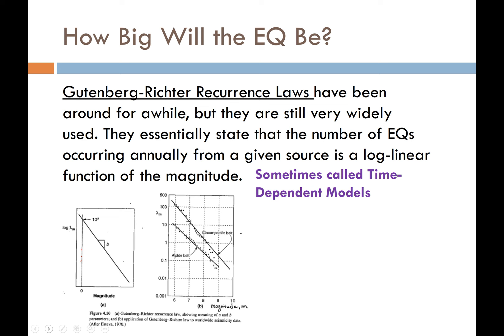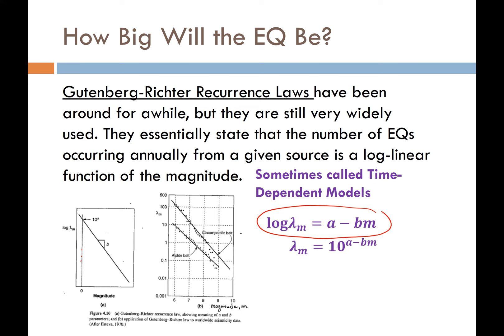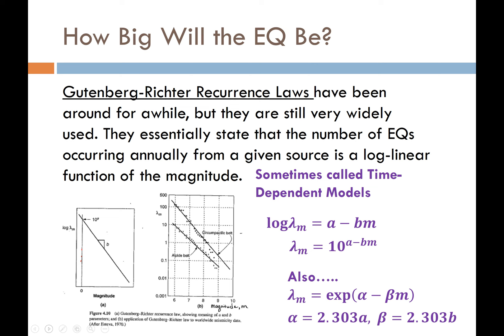These Gutenberg-Richter models are sometimes called time-dependent models. We describe the recurrence relationship using the equation between A and B, or solving linearly for the mean annual rate of exceedance. If we want to write things in terms of natural log, we convert A to alpha, where alpha equals 2.303 times A, and beta equals 2.303 times B, because we're using the exponential function instead of the power of 10.